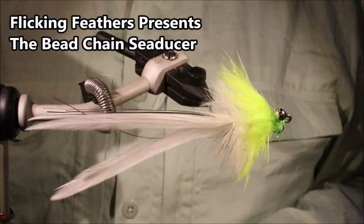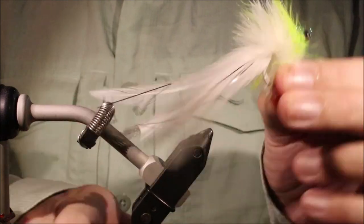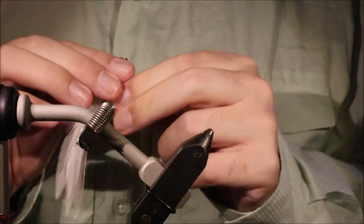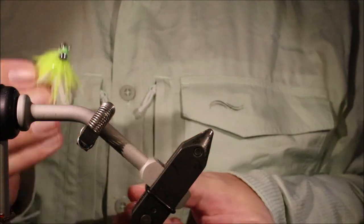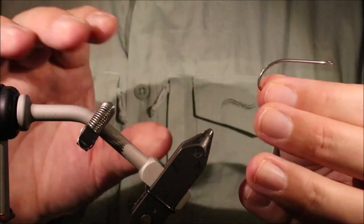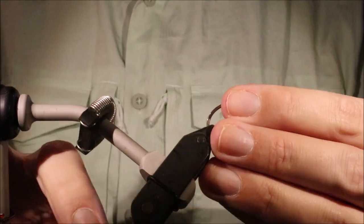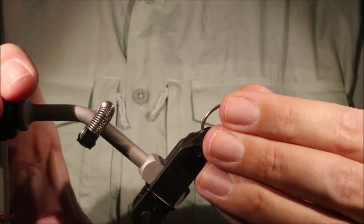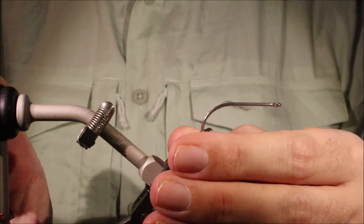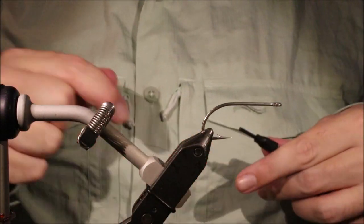Hi everybody, Martin at Flickin' Feathers again today and I'm tying a bead chain-eyed seducer. It's a very old saltwater fly but it's still very effective. It works for all kinds of species, any of the saltwater bass, or freshwater bass for that matter, snook, tarpon, alewife, everything.